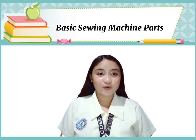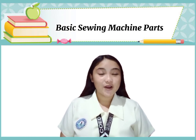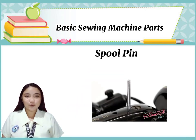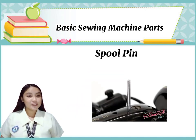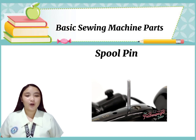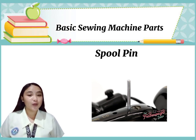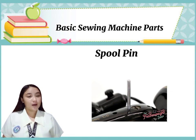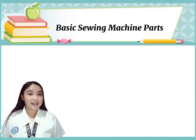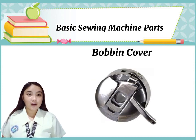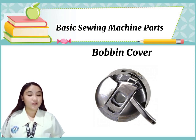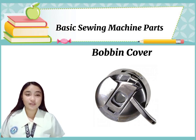Basic sewing machine parts and their function. First, spool pin. The spool pin holds the spool thread for you, making it easier for you to thread your machine and keep the thread coming as you want it to. Second, bobbin cover — covers and protects the bobbin holder while sewing.